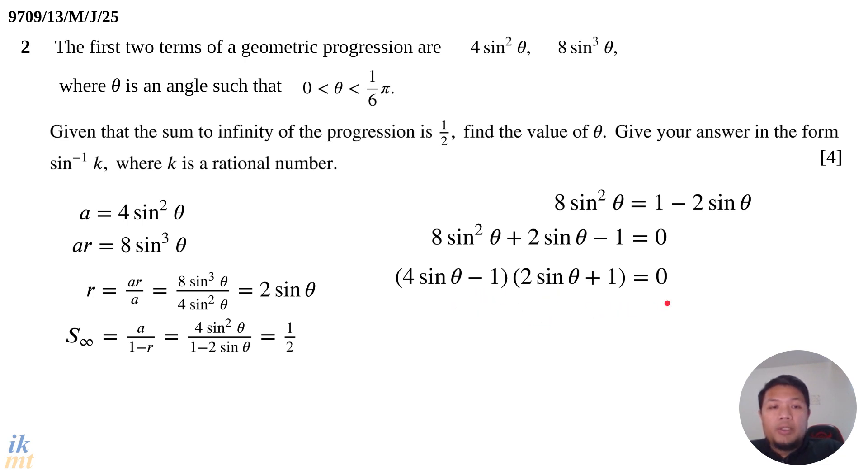if 2 sin θ + 1 = 0, we get sin θ = -1/2. We have to reject this because when sin θ is negative, θ will be larger than π. We already know that θ has to be between 0 and π/6, so we reject this solution. We have to look at the other factor.